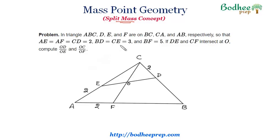The length of BD and CE is 3 respectively. So BD is 3, CE is also 3, and the length of BF is 5. All these values are given and it further says that DE and CF intersect at point O and we have to compute this ratio.